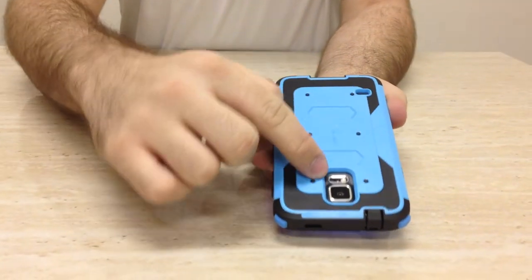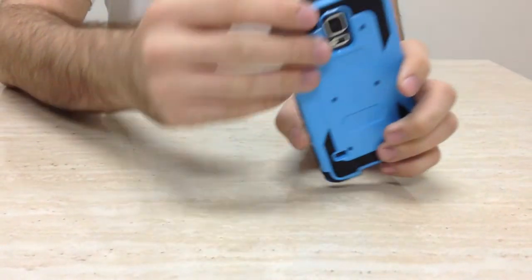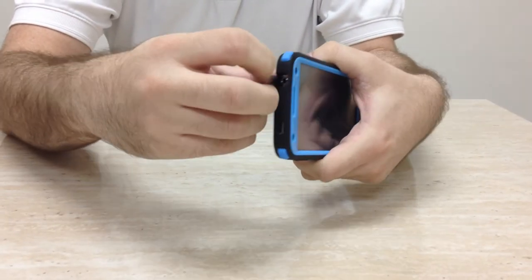As you can see, you still have your speakers, your heartbeat sensor, your camera. Everything is unobstructed. All your open ports have these little coverings to help keep dust out.